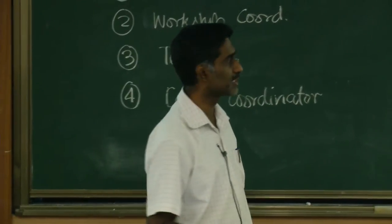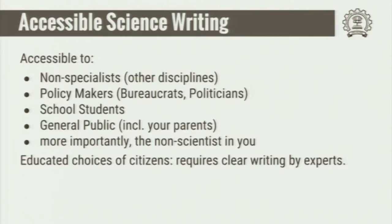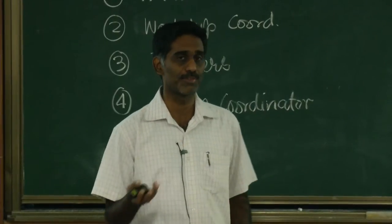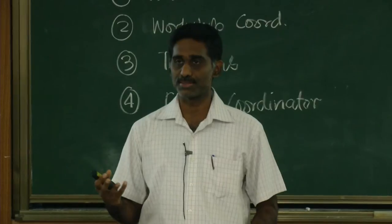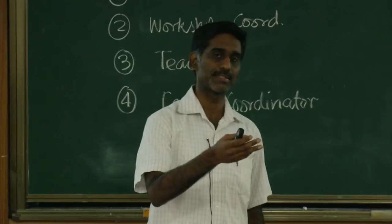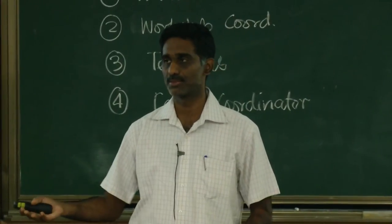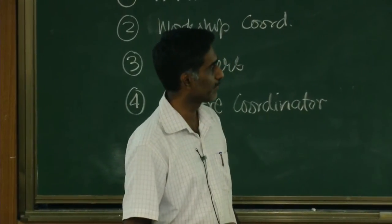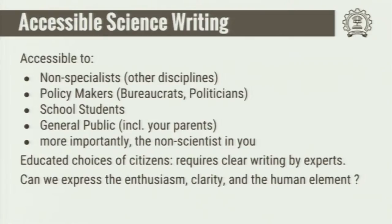The purpose of accessible writing is that citizens often have to make choices: Is GM food good or bad? Is climate change happening or not? Is mobile phone radiation good or bad? Several such questions come up for citizens to decide. These are highly technical subjects, but how do people working in that area convey it? If you are working on something very specific, how do you convey it to a general audience? Can we express this with clarity to a general audience?